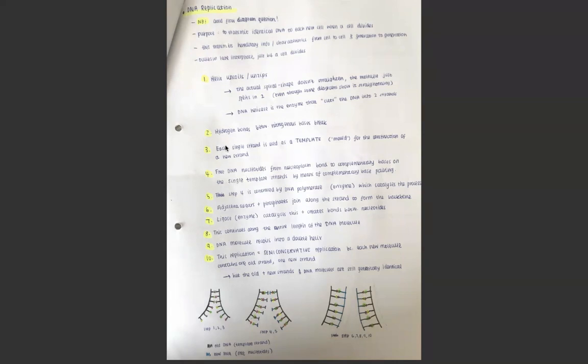Then step three, each single strand, this strand and this strand, are used as template strands for the construction of a new strand of DNA. Template strand as in like a mold, an original strand to copy off. Then the free DNA nucleotides that float within the nucleoplasm, they're always floating there, come during DNA replication and they bond to the complementary base pairs on the single template strands by means of complementary base pairing. It's really important to say this: complementary base pairing.